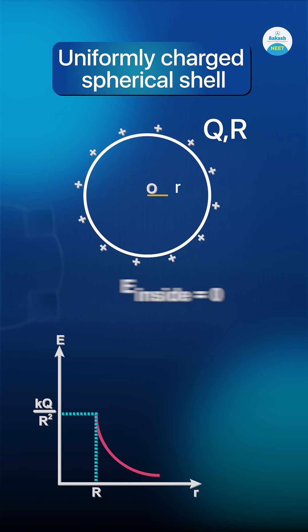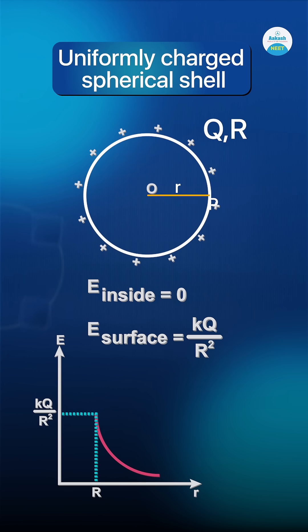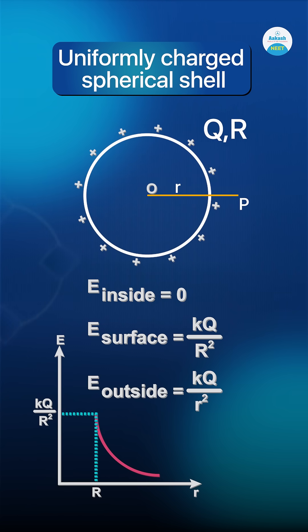Electric field at an inside point would be zero. Electric field at a point on the surface would be KQ by R square. Electric field at an outside point would be KQ by r square.